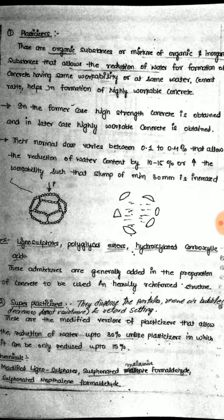Superplasticizers disperse the particles, remove air bubbles, decrease frost resistance, and retard setting. These are modified versions of plasticizers that allow the reduction of water up to 30 percent, unlike plasticizers in which water can be reduced by only up to 15 percent.